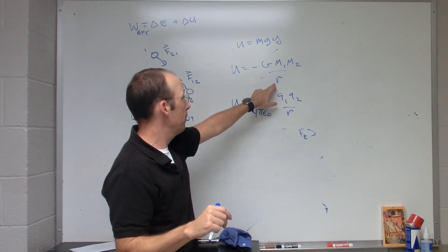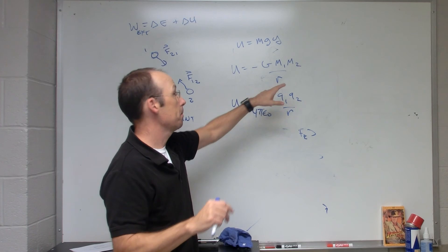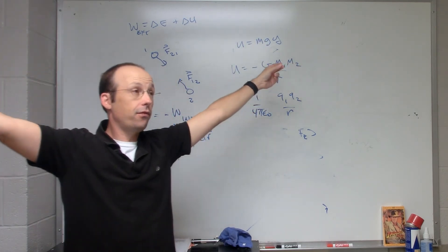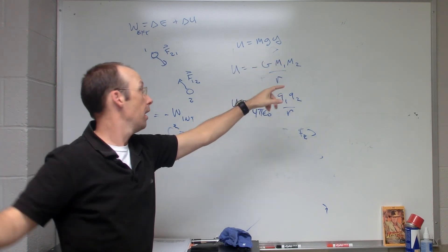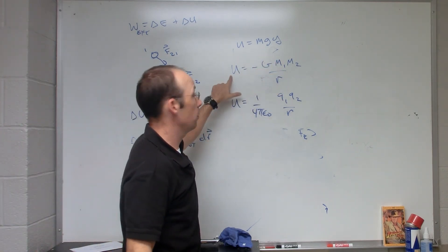We write it like this because we say that when they're infinitely far apart then they're not interacting, and so there would be no potential energy. As r goes to infinity, U goes to zero.